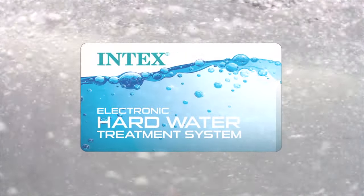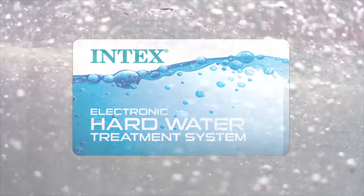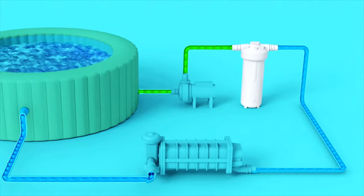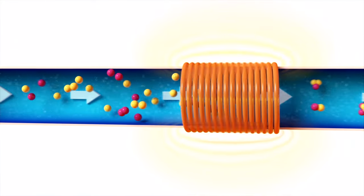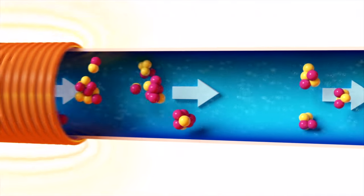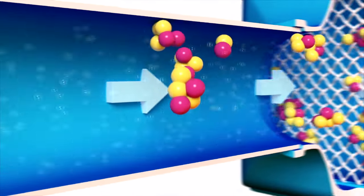Pure Spa comes with an advanced electronic hard water treatment system. The water passes through an electromagnetic field that agitates calcium and other minerals. The suspended crystals of hard water elements are retained in the filter cartridge, leaving soft water in the spa.